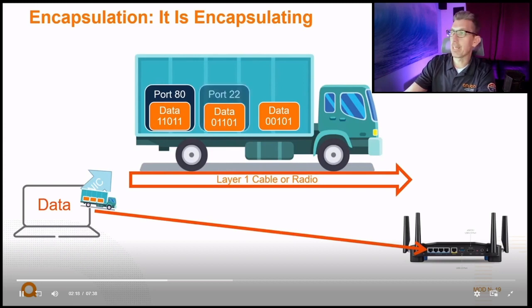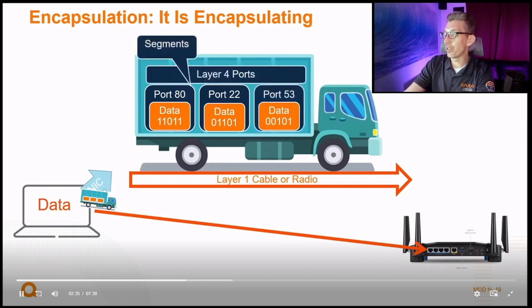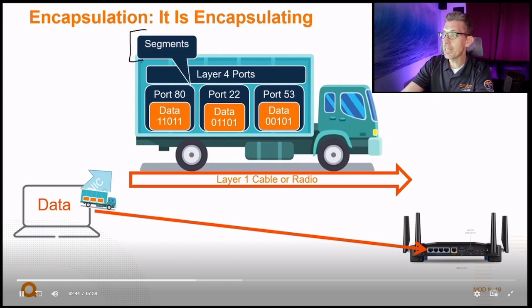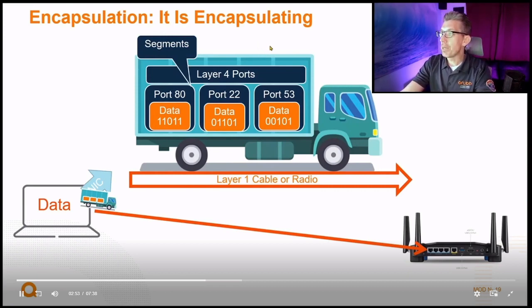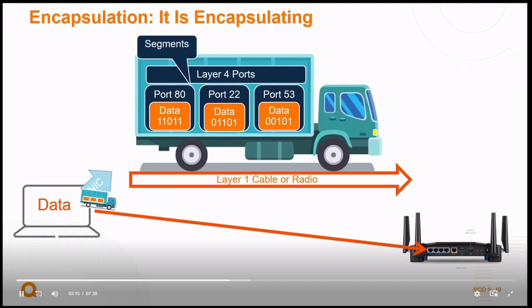Port 80 is for web traffic. Port 22 is known as secure shell traffic — it's for command line. To configure a CX switch remotely from your home, the CX switch supports a secure command line connection with SSH. It does not support Telnet, which is an unsecure legacy protocol. Port 53 is DNS. This section of data as it's being carried across we refer to as a segment, whereas layer one is referred to as the physical layer. If you're troubleshooting what application is going through, or if a firewall is blocking a port, you would refer to the payload as the segment.